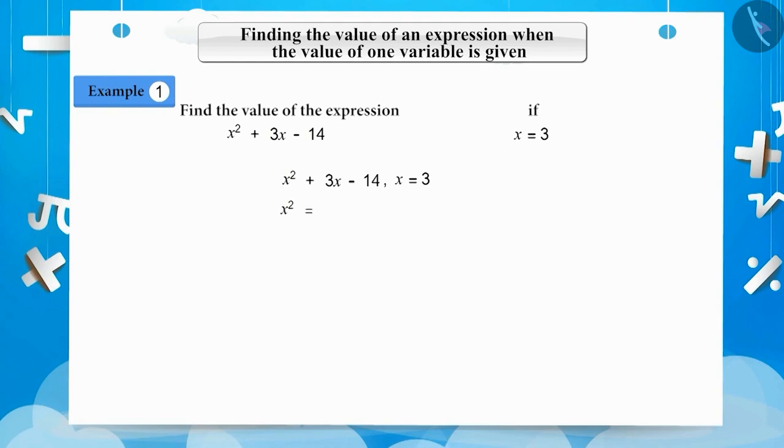On doing so, x² becomes 3², and 3x becomes 3 multiplied by 3. Now, our expression becomes 3² + 3 × 3 - 14.